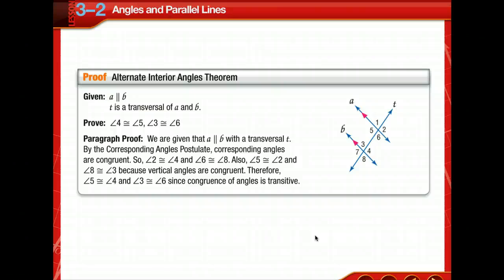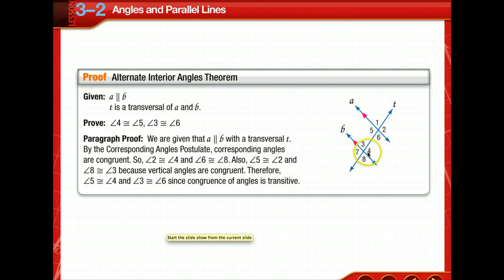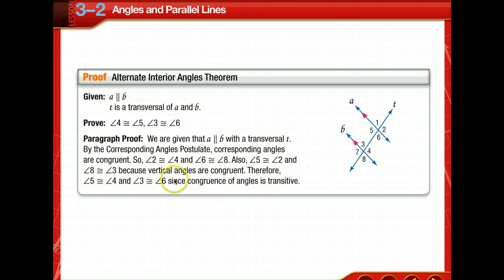Here is a proof of the Alternate Interior Angles Theorem. Since postulates are accepted without proof, we can use the Corresponding Angles Postulate to prove each of those theorems. Given that A and B are parallel and T is a transversal, we prove that angle 4 is congruent to angle 5 and angle 3 is congruent to angle 6. By the Corresponding Angles Postulate, angle 2 is congruent to angle 4 and angle 6 is congruent to angle 8. By the Vertical Angles Theorem, angle 5 is congruent to angle 2 and angle 8 is congruent to angle 3. Therefore, angle 5 is congruent to angle 4 and angle 3 is congruent to angle 6 by the Transitive Property of Congruence.